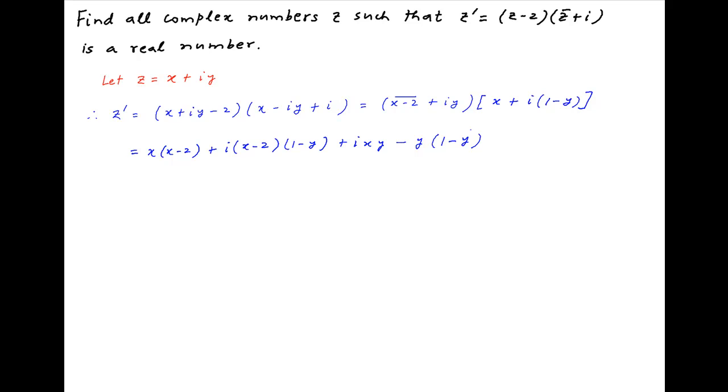Combining the real and imaginary terms, this is equal to x times x minus 2 minus y times 1 minus y plus i times x minus xy minus 2 plus 2y plus xy. xy cancels in the second term inside the brackets.